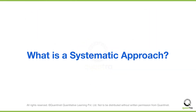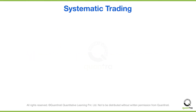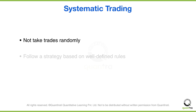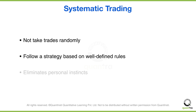But what is a systematic approach? A systematic approach simply means that you will not take trades randomly. Rather, you will strictly follow a trading strategy that you have created based on some well-defined rules. This completely eliminates the possibility of trading on the basis of personal instincts.